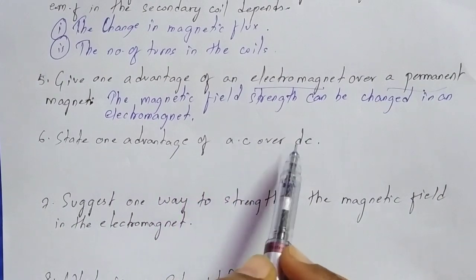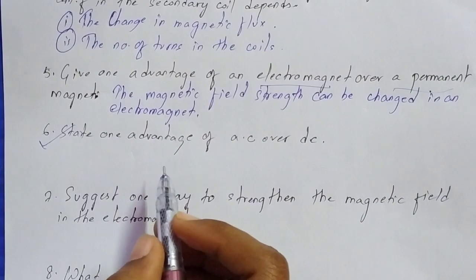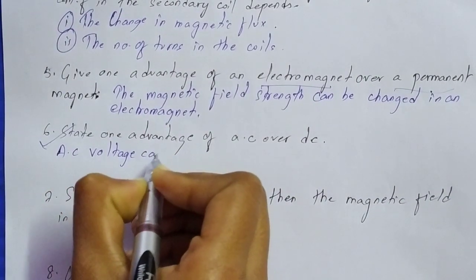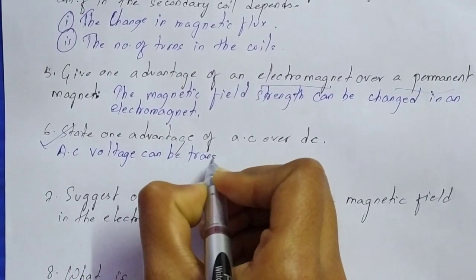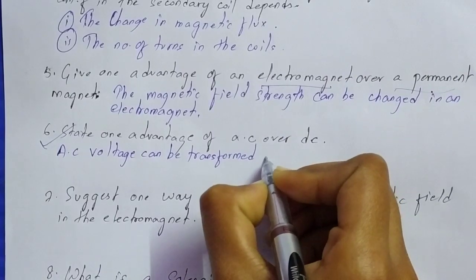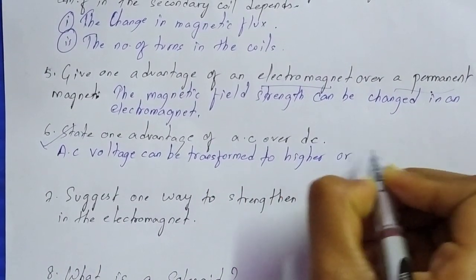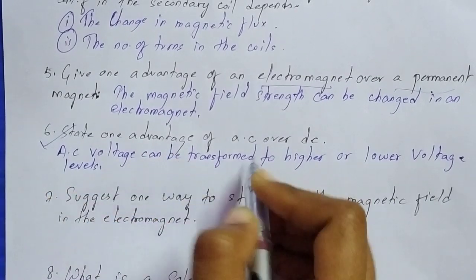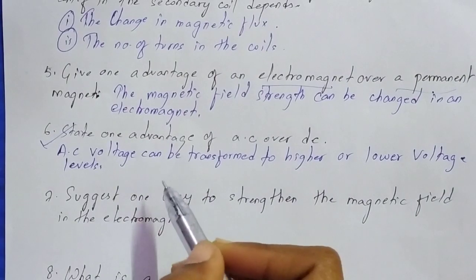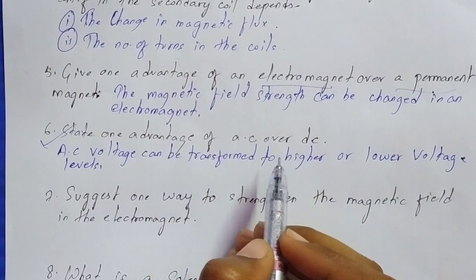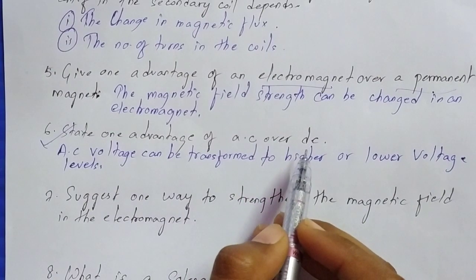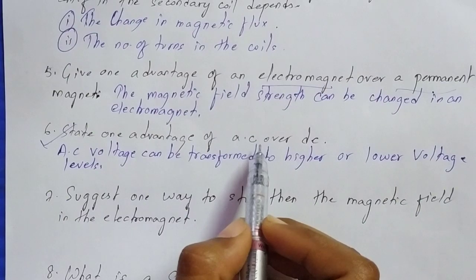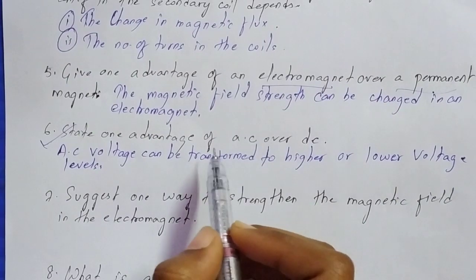Question number six: state one advantage of AC over DC. This is a very important question asked frequently from this chapter. One advantage of AC over DC is that AC voltage can be transformed to higher or lower voltage levels, whereas DC cannot be transformed. Additionally, one advantage of DC over AC is that DC can be stored in batteries, but AC cannot be stored in batteries.